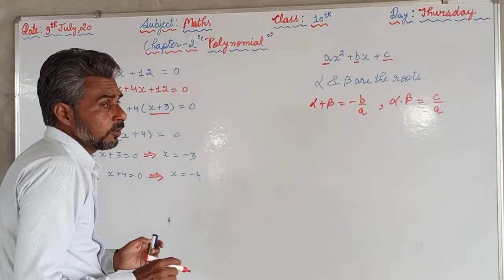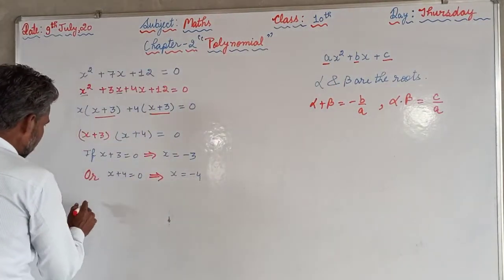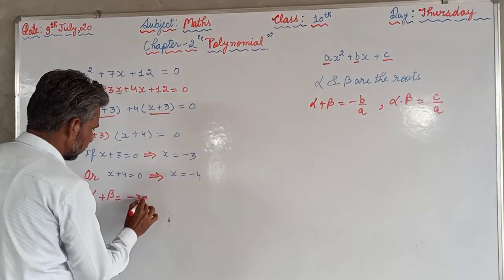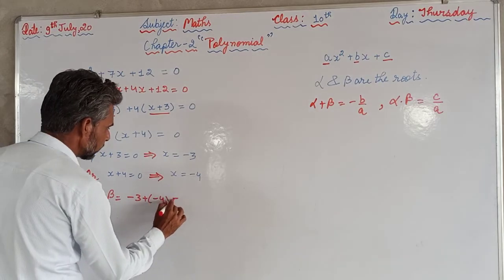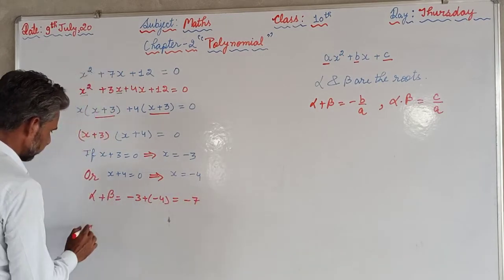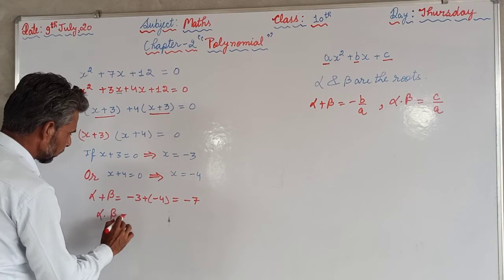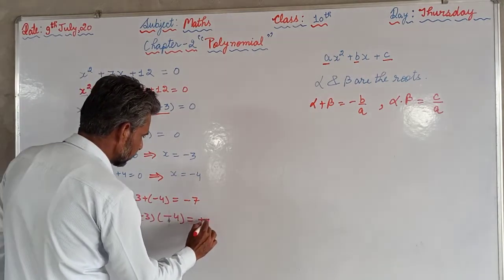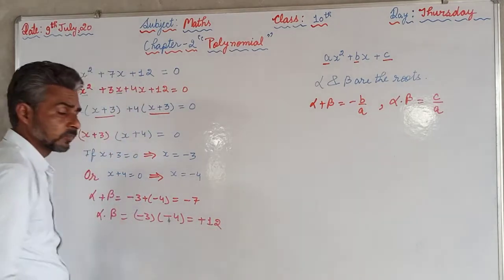From here, now we have to verify. α + β: α is -3 plus -4, that is equal to -7. α × β, that is -3 × -4, minus times minus plus, that is 12.